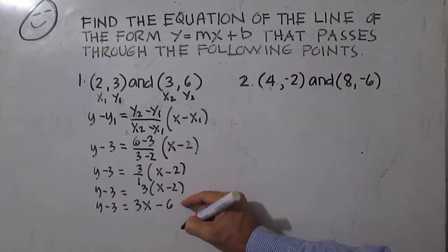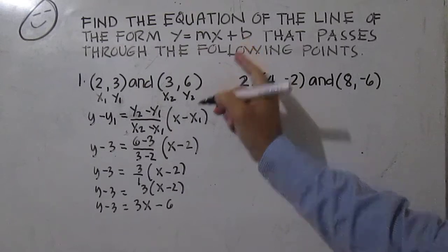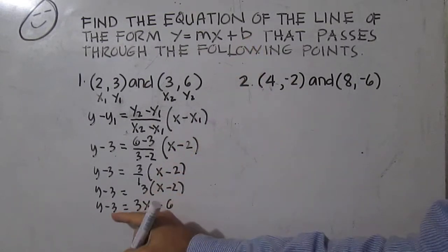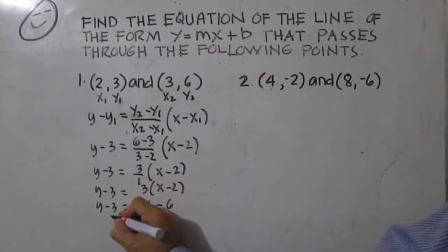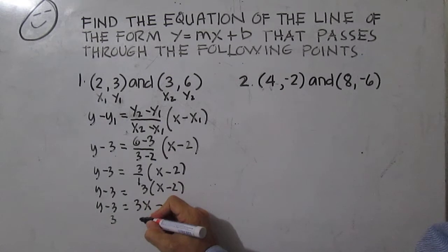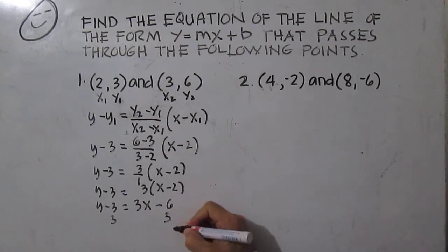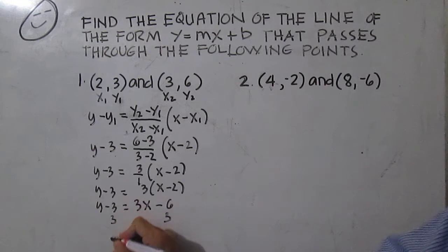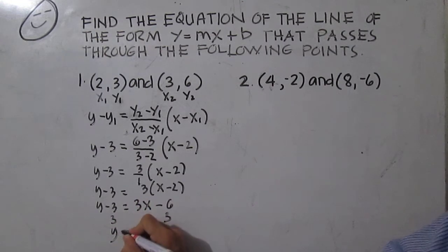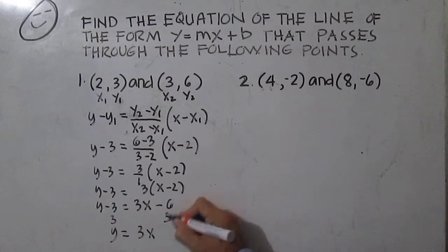Since we need the form y equals mx plus b, let us add three to both sides of the equation. So y equals three x minus three.